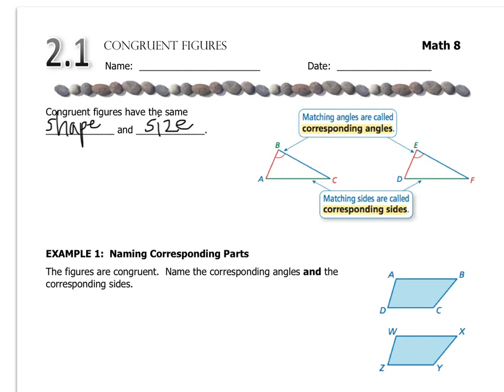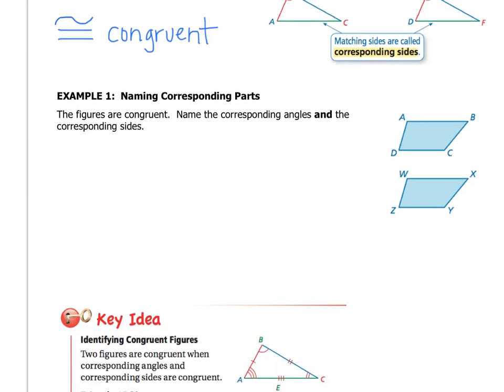Now, before we move on to example one down below, I want to show you the symbol for congruent. Now, you might have learned this before, but if you didn't, that's okay, here it is. It's an equal sign, and then it's got like a squiggle at the top, so that's the symbol for congruent. So I'm going to use that when I write instead of using the phrase, is congruent to. Alright, here we go, example one.